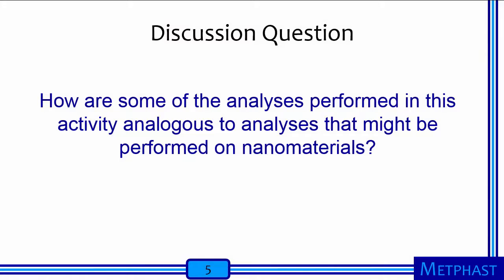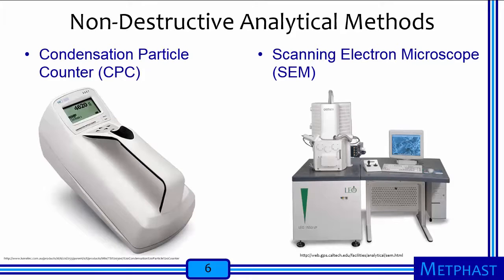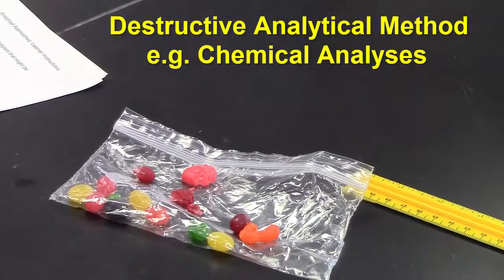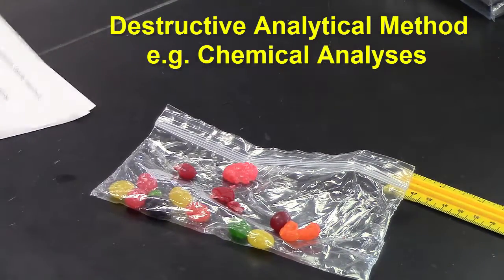How are some of the analyses that you performed in this activity analogous to analyses that might be performed on nanomaterials? The non-destructive analysis for Set 1 objects in the opaque bag is analogous to counting particles in the air using analytical equipment such as a condensation particle counter, which uses non-visual or non-observational techniques. Opening the bags and visualizing Set 1 objects is analogous to imaging samples on a scanning electron microscope, allowing learners to better determine the number of objects and whether they differ in size, shape, or color. The destructive analysis on Set 1 and Set 2 objects are analogous to performing a chemical analysis that consumes a sample.